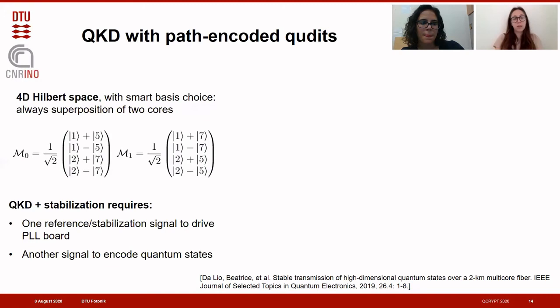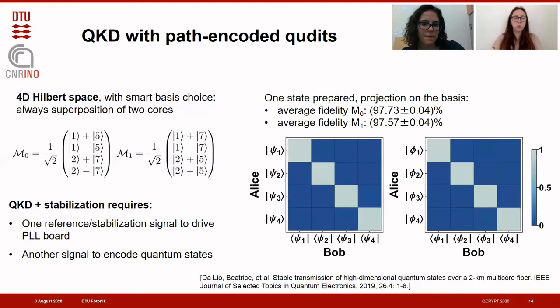When we prepare one state at a time and project onto all possible states of the same basis, we can measure the fidelity. We see that we always achieve more than 97% fidelity, which means our stabilization system can effectively track and compensate for the phase drift during transmission over the two-kilometer multicore fiber.